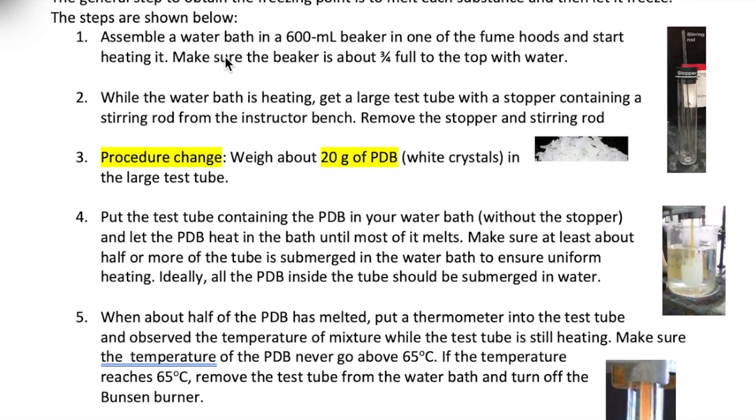So let's start by assembling a water bath inside a fume hood. Make sure about three quarters of your beaker is filled with water and heated with a Bunsen burner. While the bath is heating, get a test tube that's been pre-fitted with a stirring rod at the instructor bench. Weigh about 20 grams of your PDB, which looks like white crystals, into the test tube.